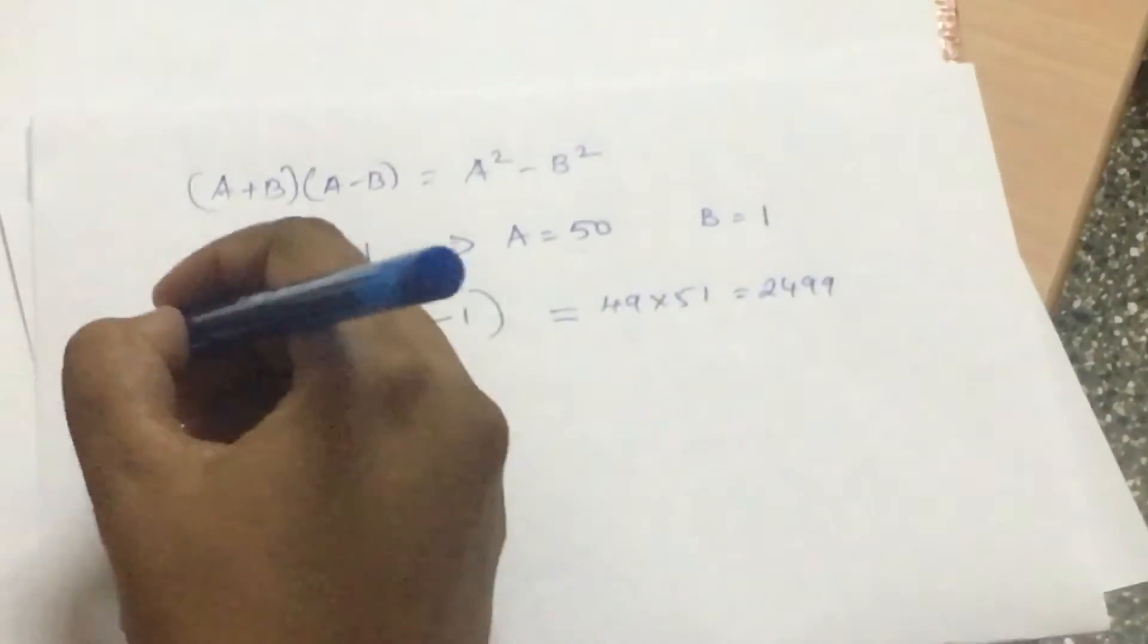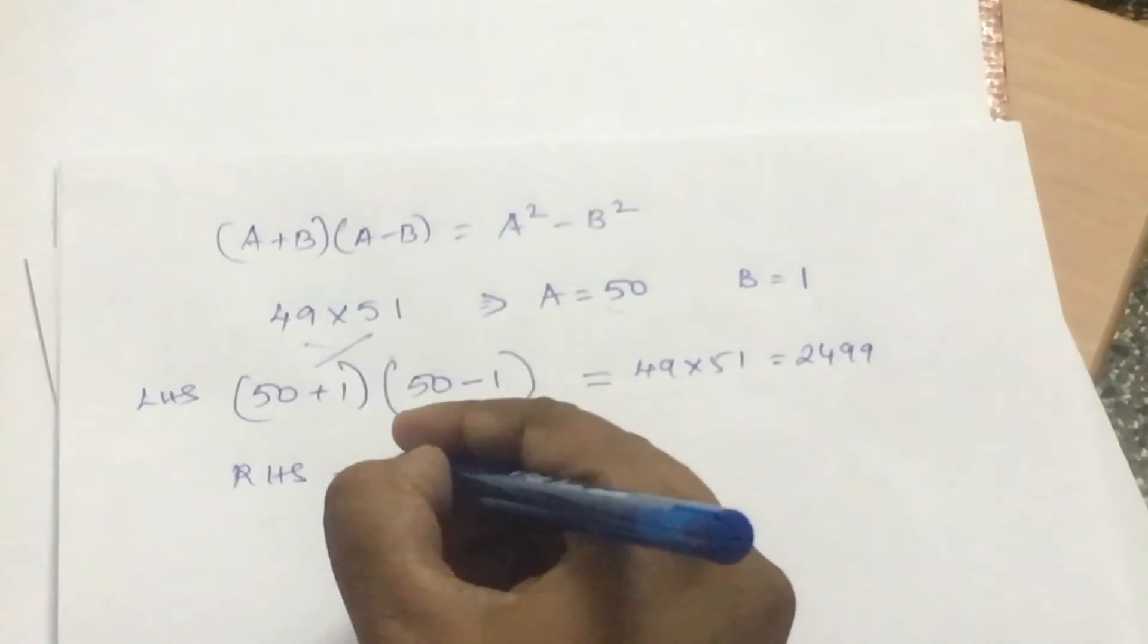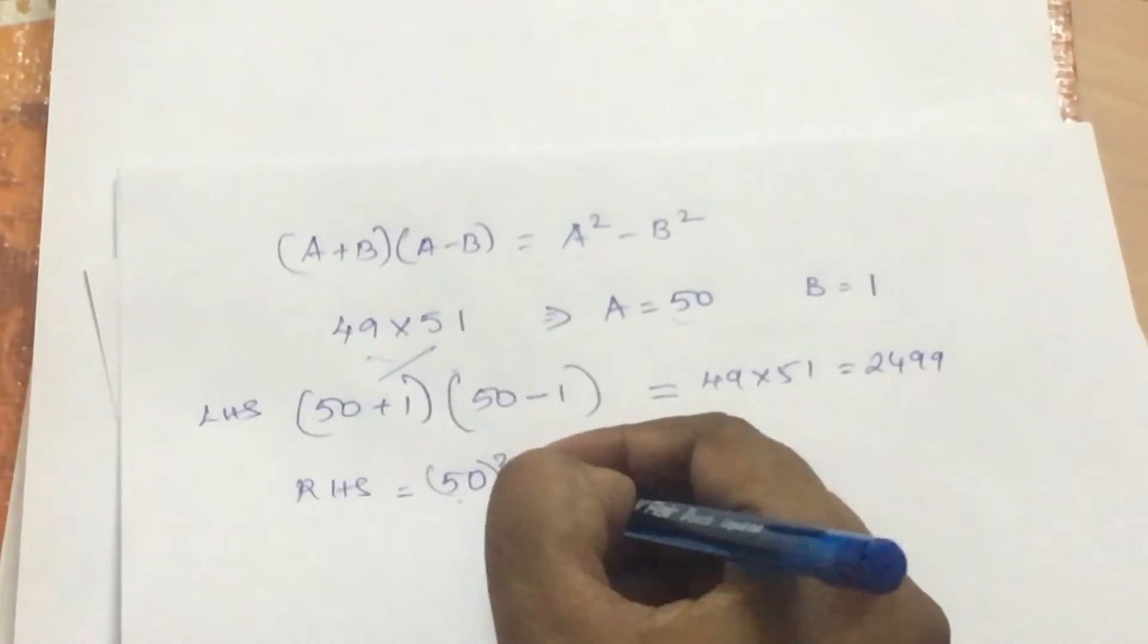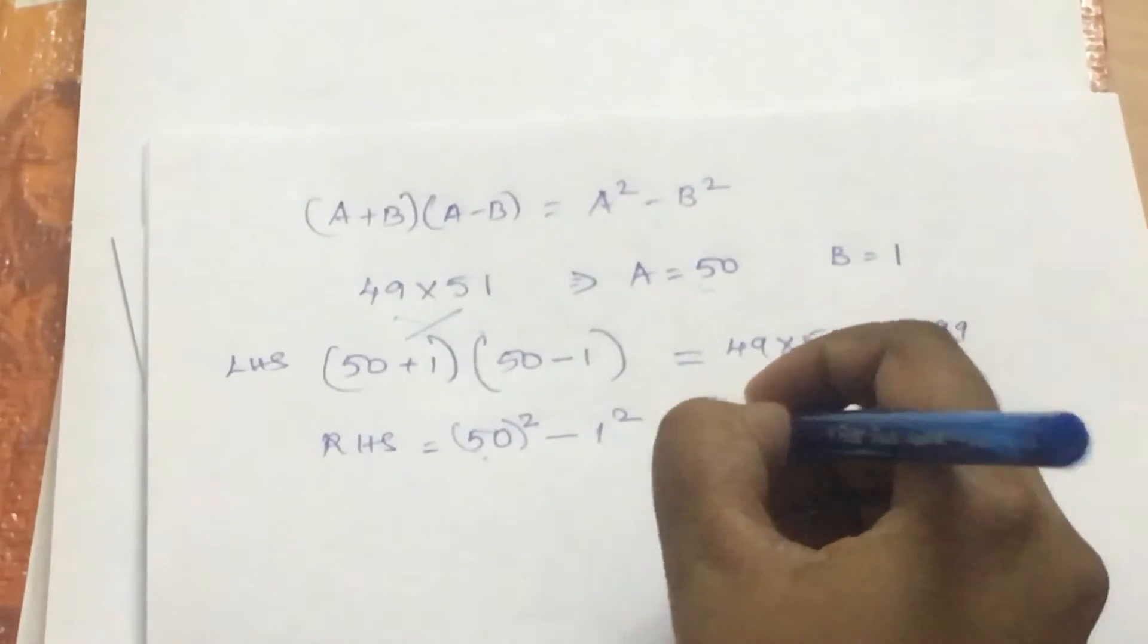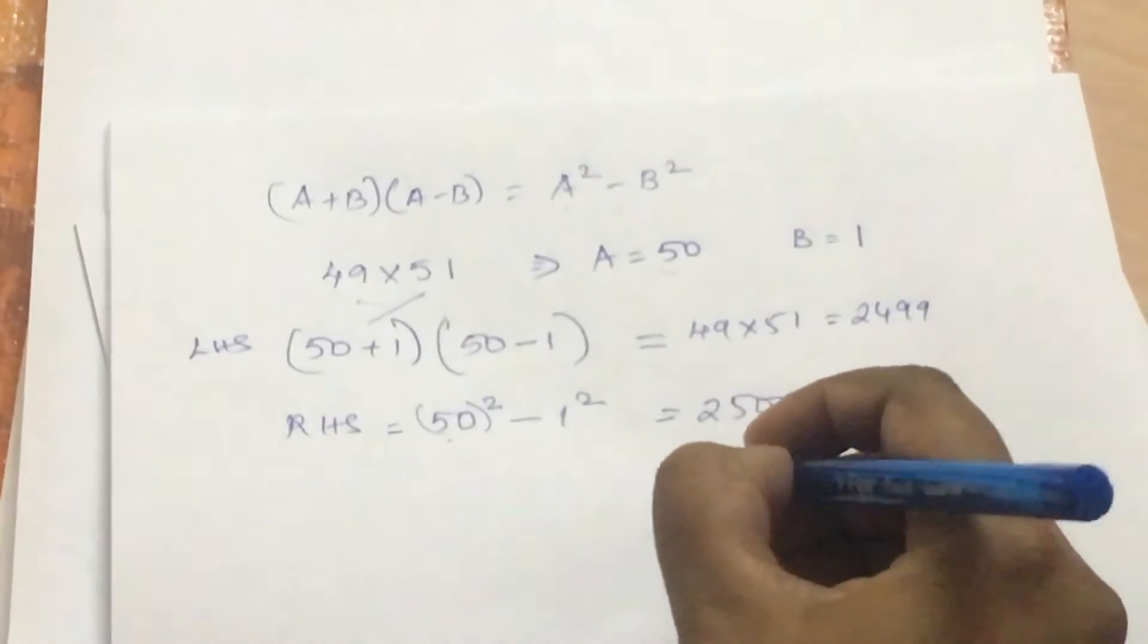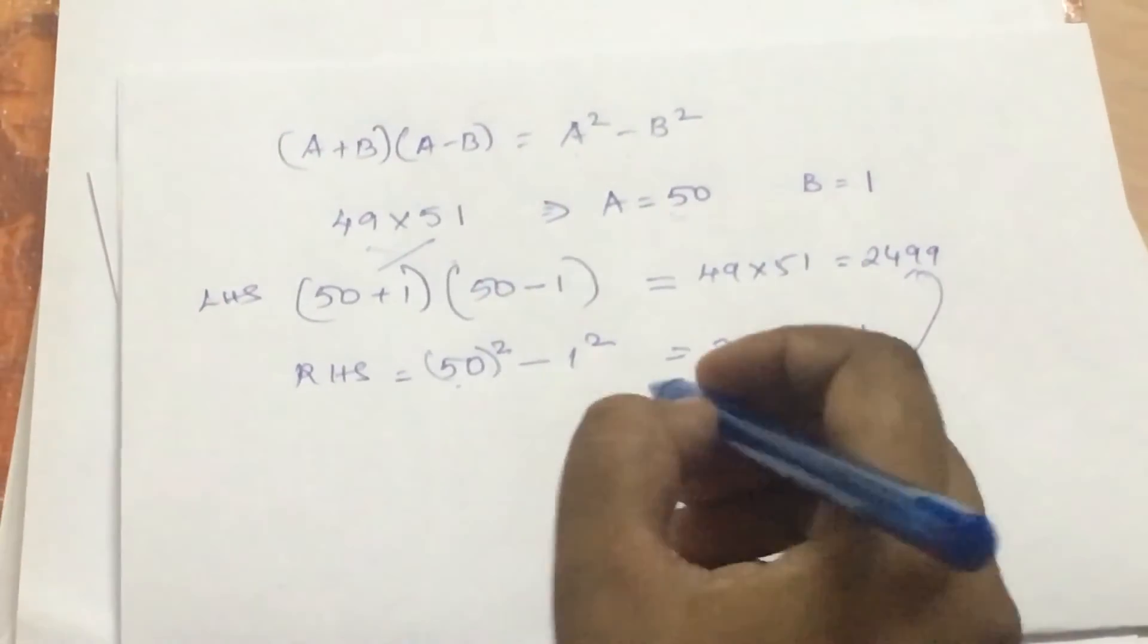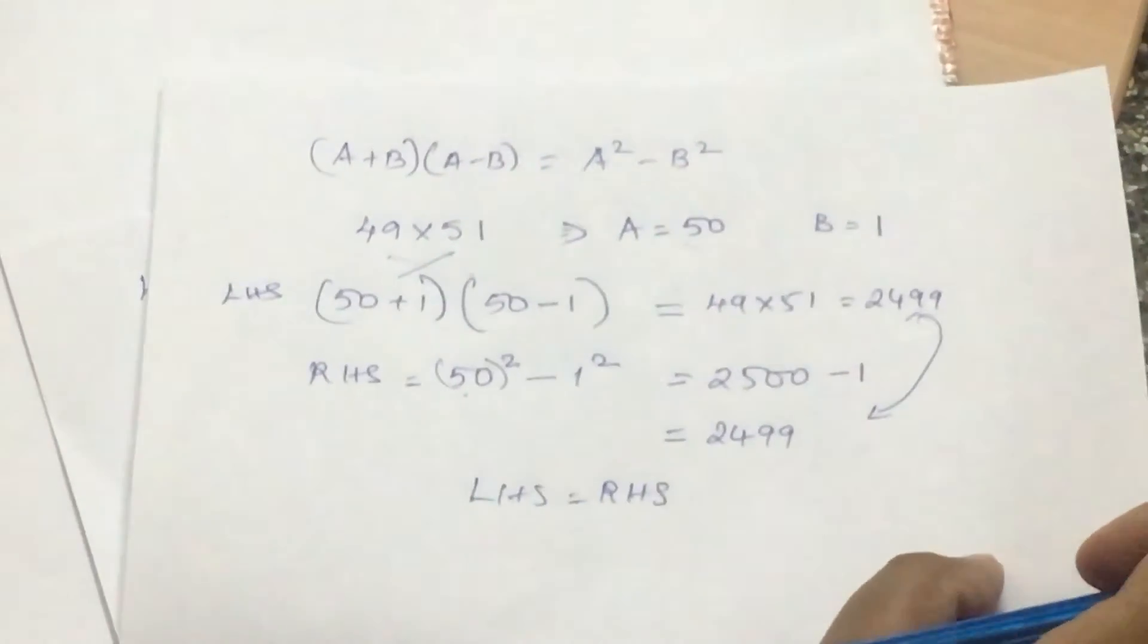Applying the identity, so my LHS is 50² because it's a² here, therefore 50² - b² where b is 1, so 1². And that is simplified because it's 2500 - 1 which again gives me 2499. So again we have proved that LHS is equal to RHS. Now where is this identity useful?